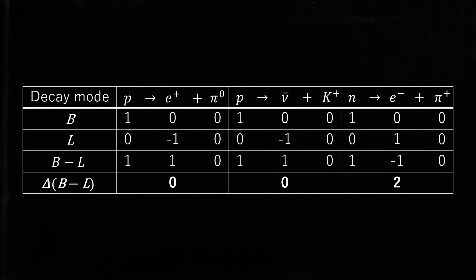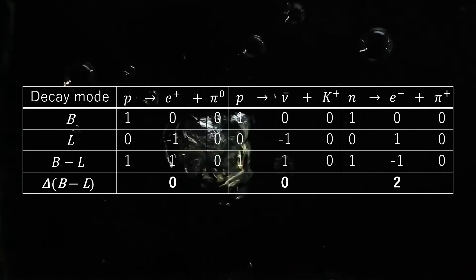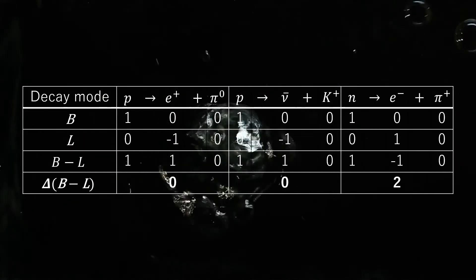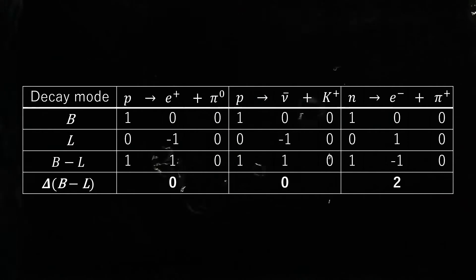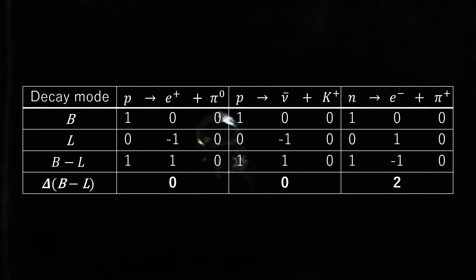In addition to the baryon number violation, lepton number violation is also required for nucleon decay since, in the standard model, leptons are the only free fermions which are lighter than nucleons.